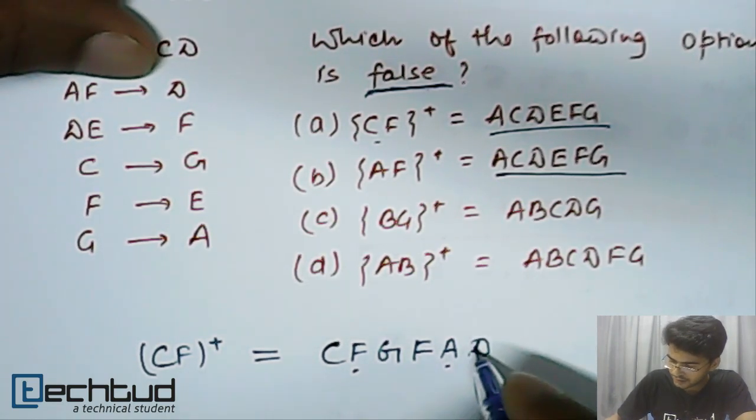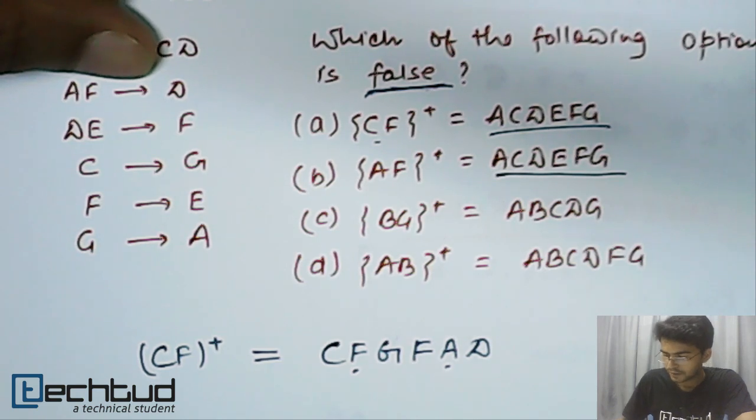So, A and F collectively can determine D. So, now we also have D in our set. Now let's see.